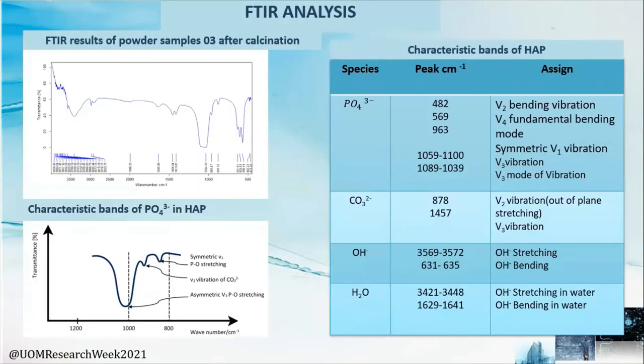In the FTIR analysis, we obtained results for each expected peak for phosphate, hydroxide, and water. Unexpectedly, we also detected carbonate, but this is not a problem for biological hydroxyapatite because naturally occurring hydroxyapatite also has carbonate incorporated in its crystal structure, coming from atmospheric CO2 — this is very common.